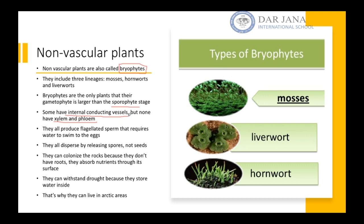They produce flagellated sperm, meaning their sperm have flagella, which enables them to swim in order to reach the egg. That means for fertilization to happen, there should be water — so bryophytes require water for fertilization.